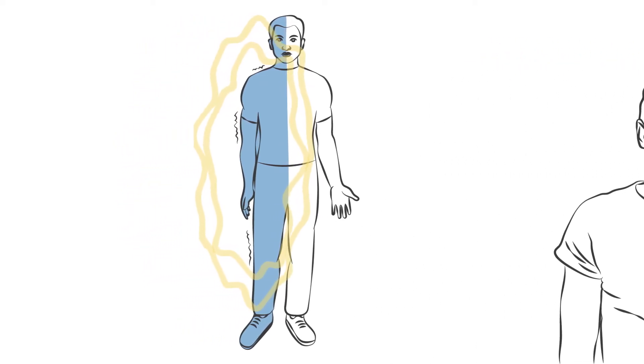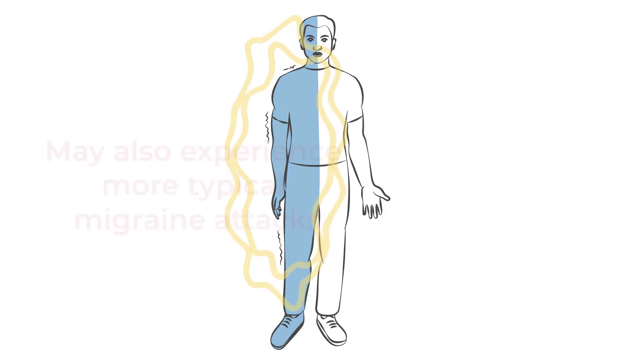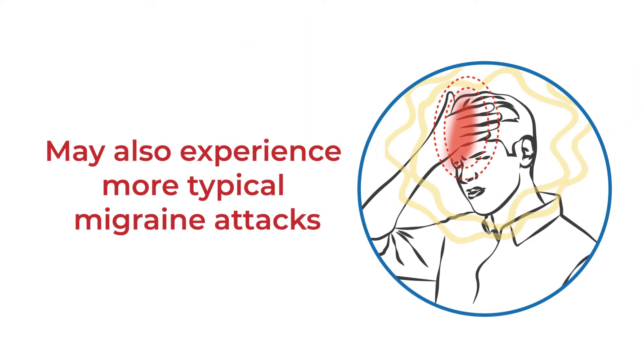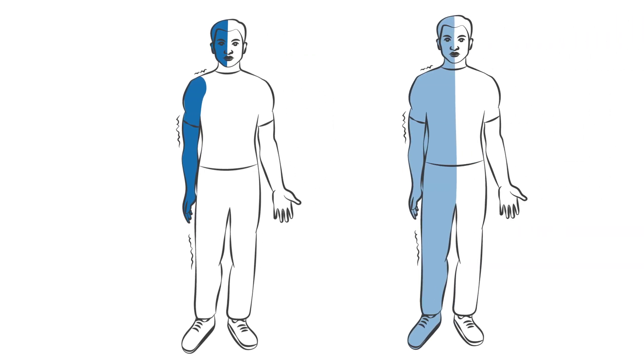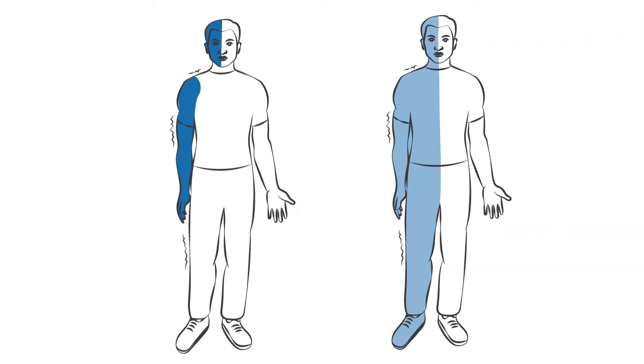Most individuals who experience hemiplegic migraine also experience more typical migraine attacks. Hemiplegic migraine may affect only part of the body, such as the face or a hand or arm. Weakness of the entire side of the body can also occur.